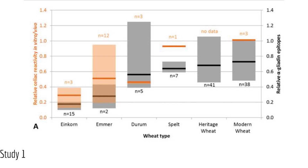Emmer has slightly higher reactivity, durum is even higher, and spelt is higher still. Heritage wheat refers to modern wheat that is more than 100 years old, while modern wheat refers to varieties developed within the last 100 years — so don't be fooled by the term 'heritage'; it's actually not that old evolutionarily. As we move to more and more modern forms of wheat, the immune reactivity goes up and up. A lot of that is related to the D genome encoded by the last hybridization event.